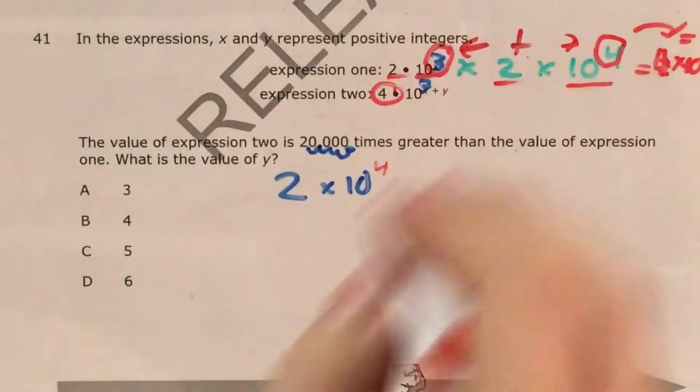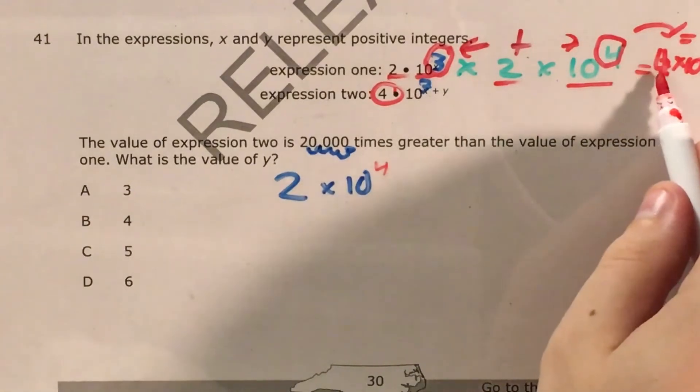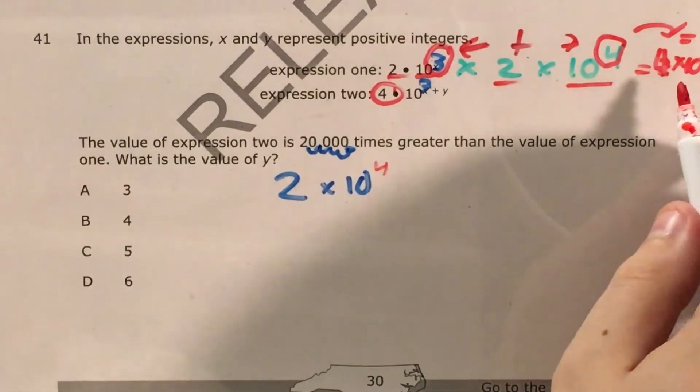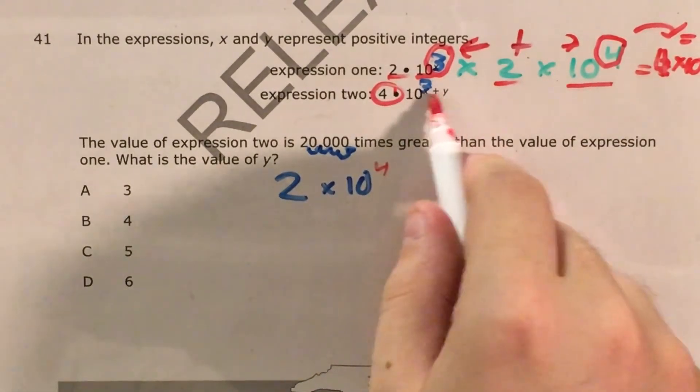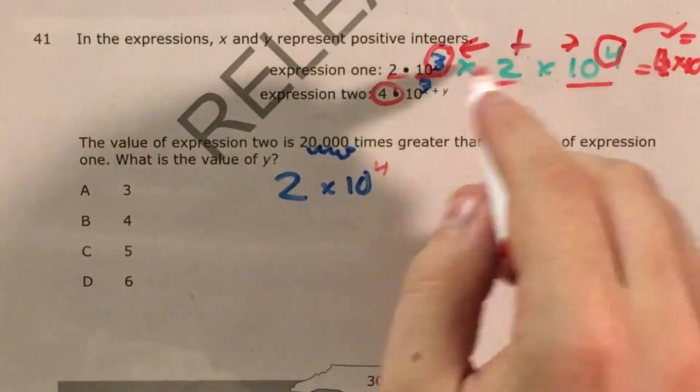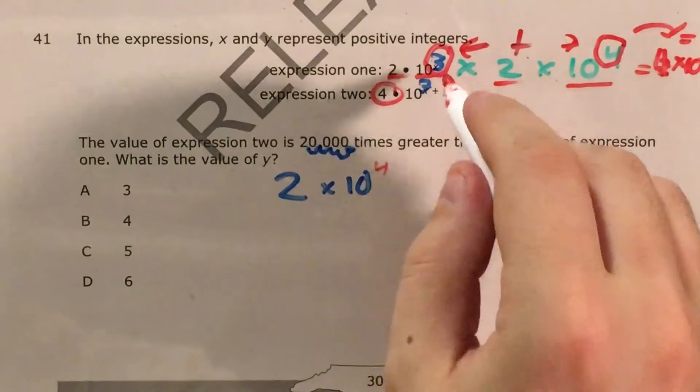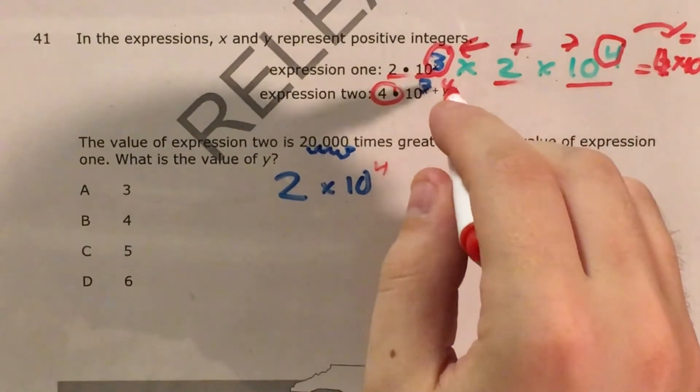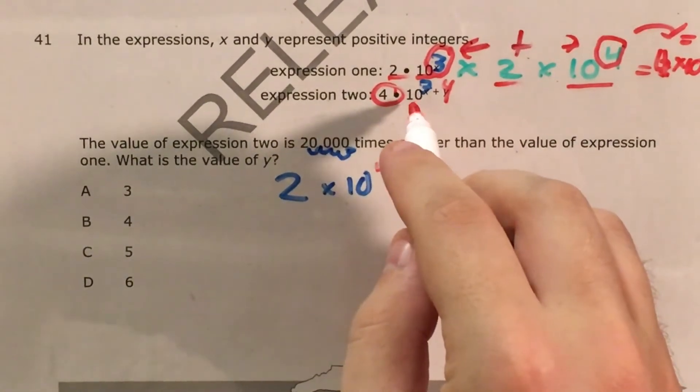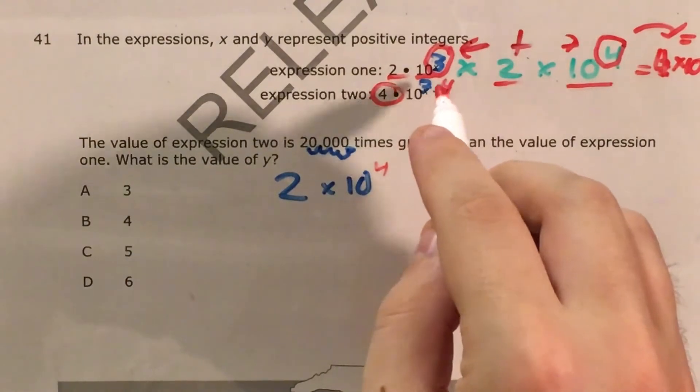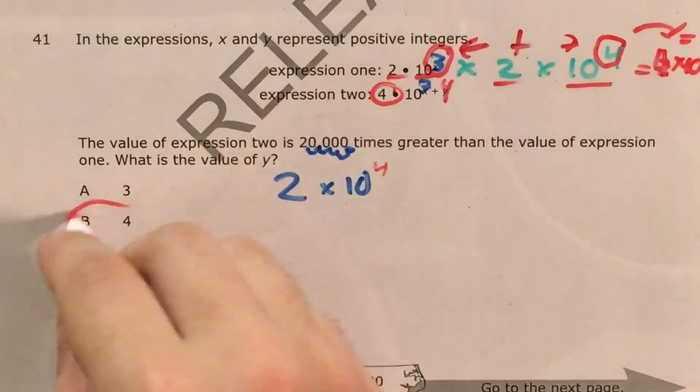And they equal the exponent of my resulting number, so this is now 4 times 10 to the 7. Now, 7 is 3 plus what? Well, we could actually see that by this property of exponents, we were adding 3 and 4 to begin with, which means that expression 2 has to be 10 to the power of 3 plus 4. So my y value is 4.